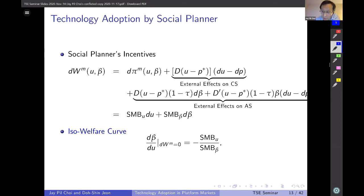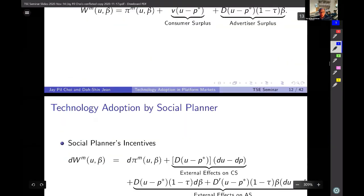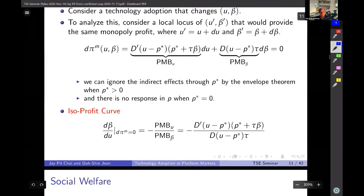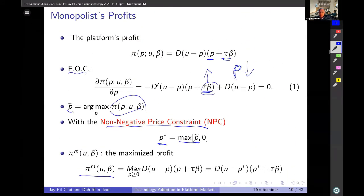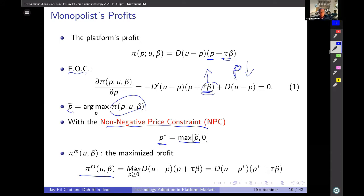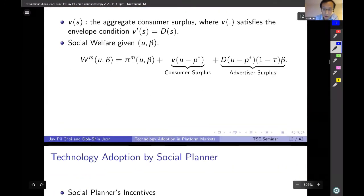A question is raised: the P-star in the isowelfare curve — is it the same as P-star in the isoprofit curve? The answer is that we are looking at the second-best outcome — P is chosen by the platform. We are not considering the case where the social planner chooses P. So we are assuming the social planner can only control U and beta, while the price is set by the platform.